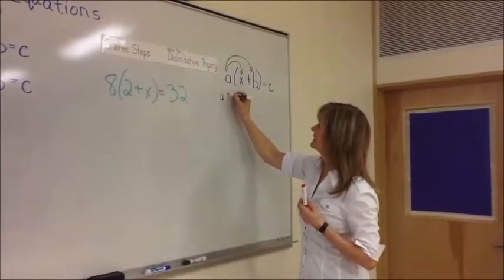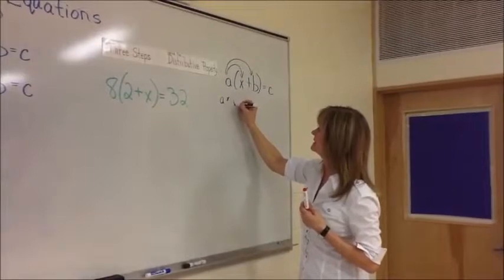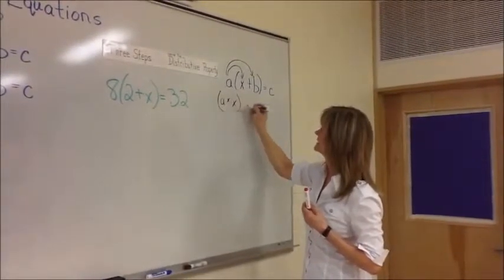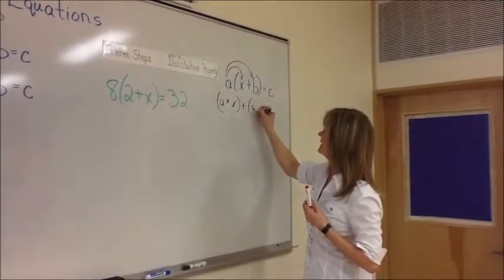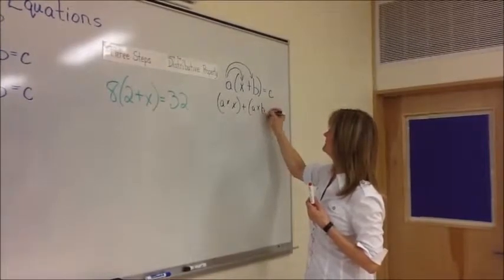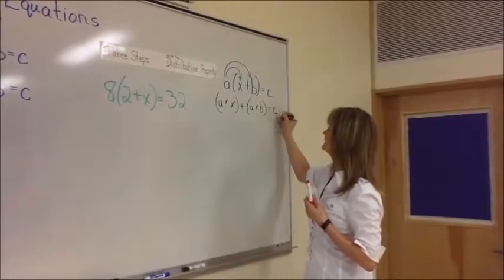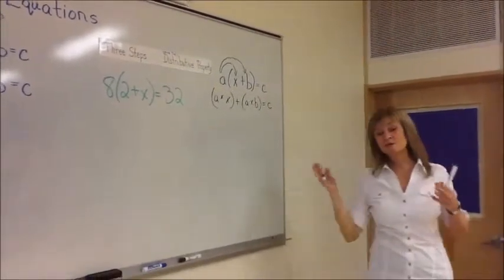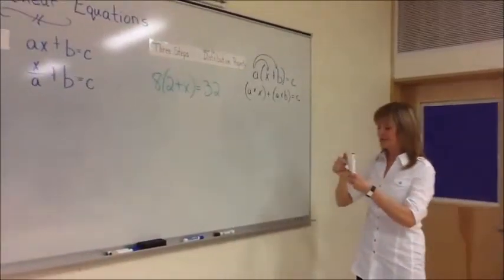So you could rewrite it that A times X, in brackets, plus A times B, in brackets, equals C. So that hopefully will sort of simplify matters.